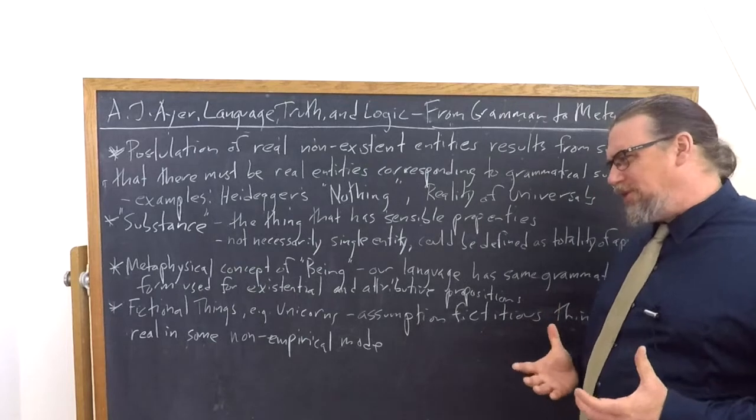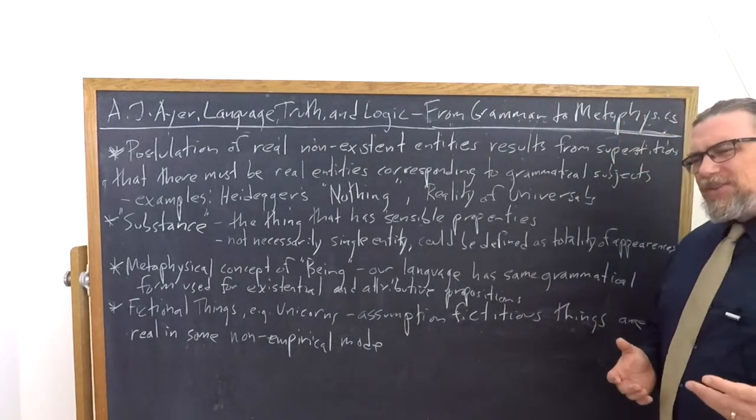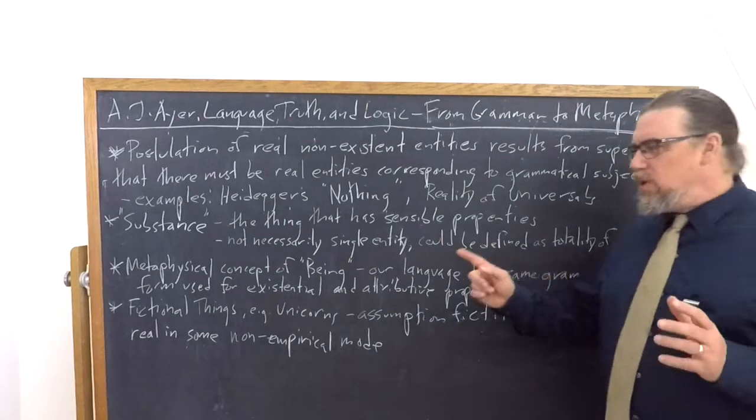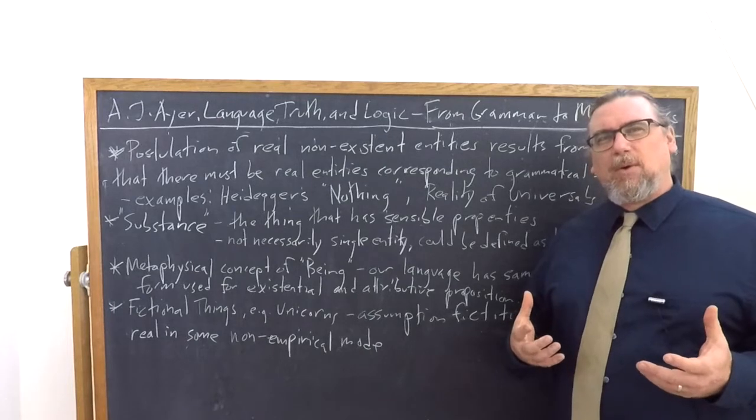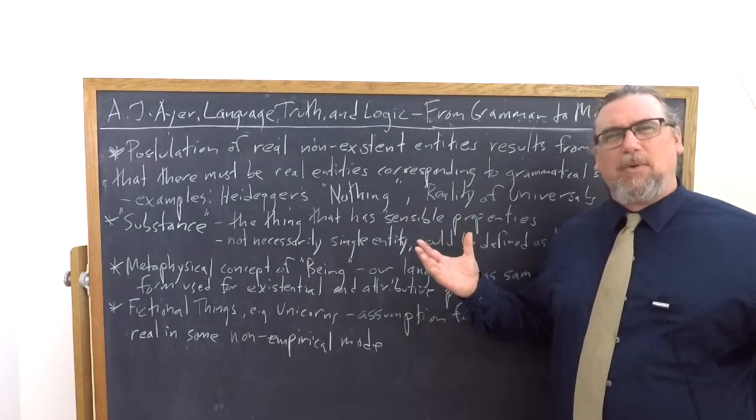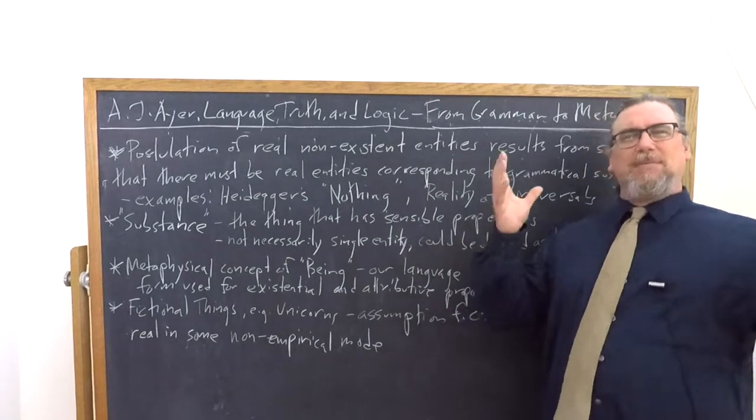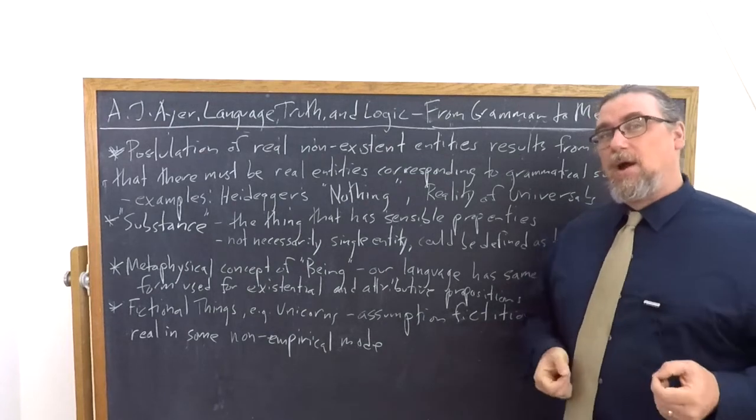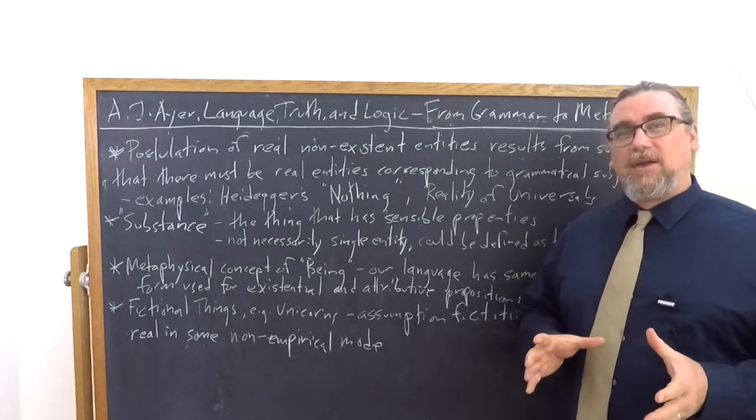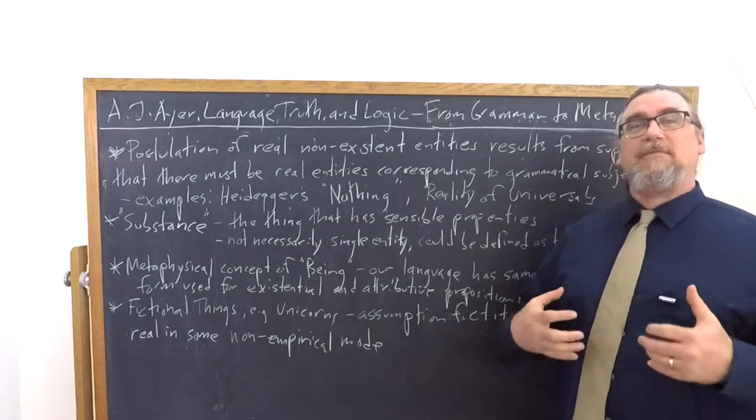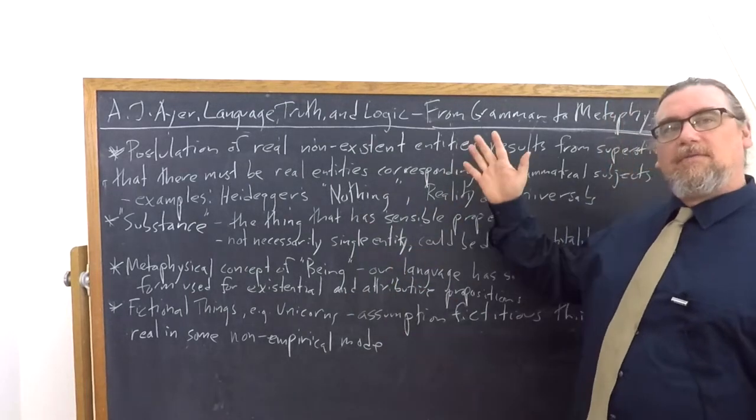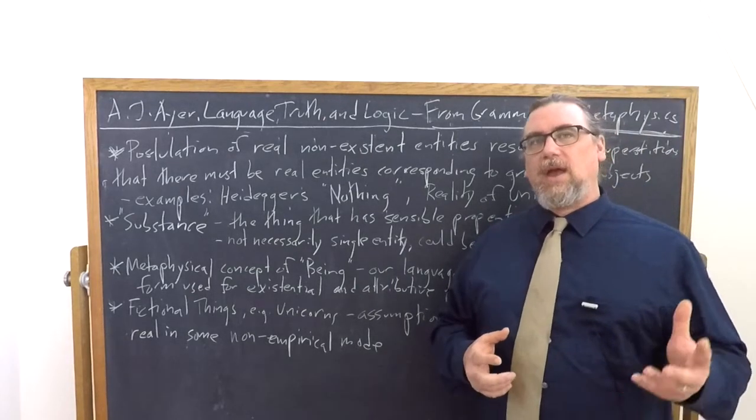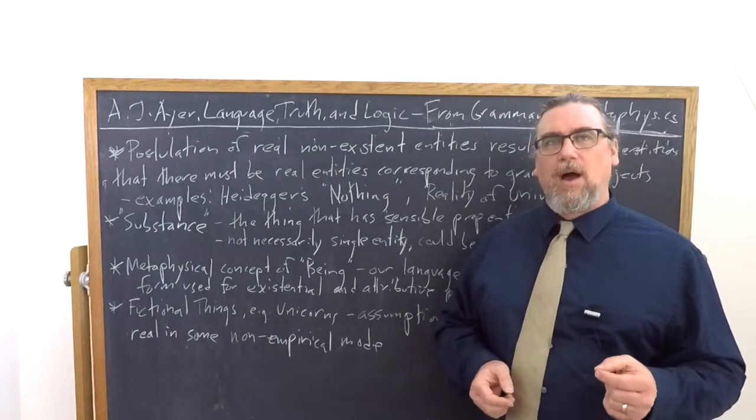So, how does it work for fictional things? Ayer says that our grammar misleads us into this assumption that fictitious things are real in some non-empirical mode, and Ayer says, well, there isn't any non-empirical mode of being real. That's what it means to be real. We're being, once again, misled by the way our language works. So, these are all examples in Ayer's view of how metaphysics gets generated out of not paying close enough attention to how our language works and important distinctions that we might want to draw about our language.